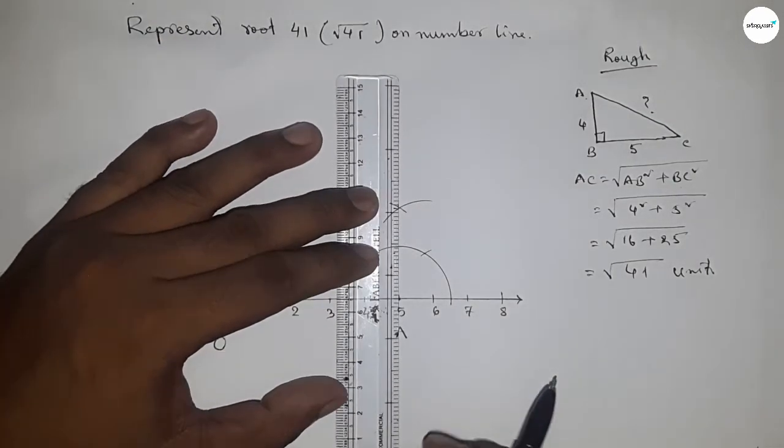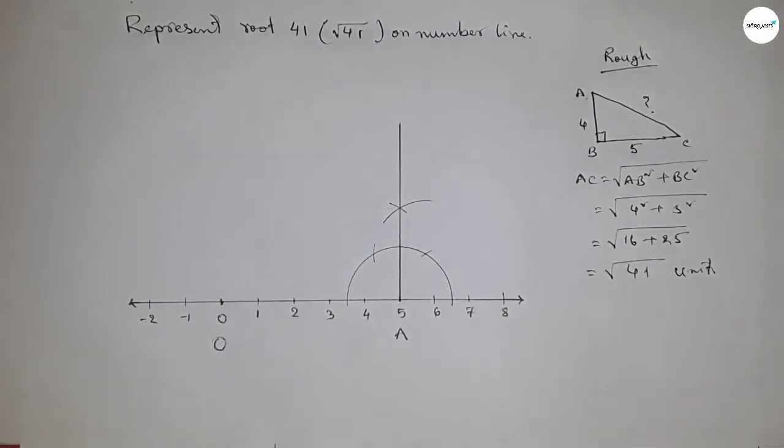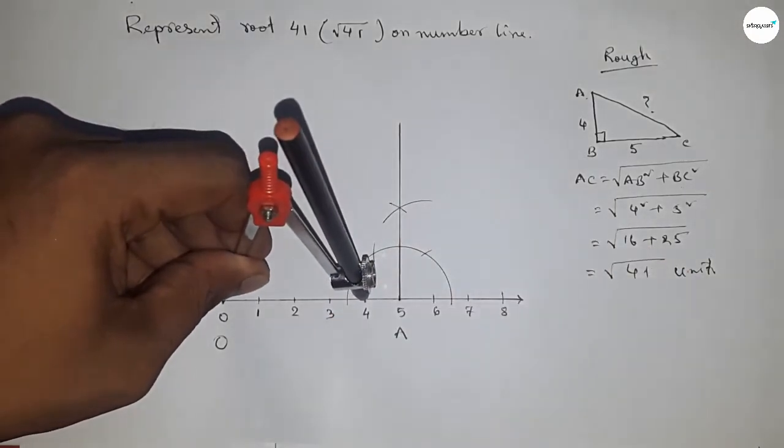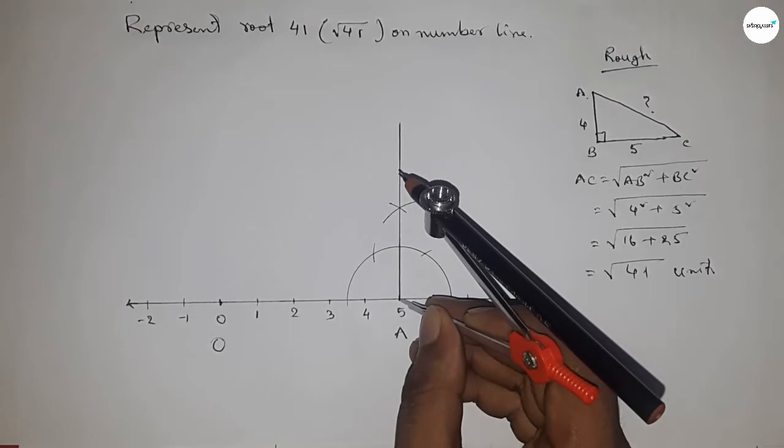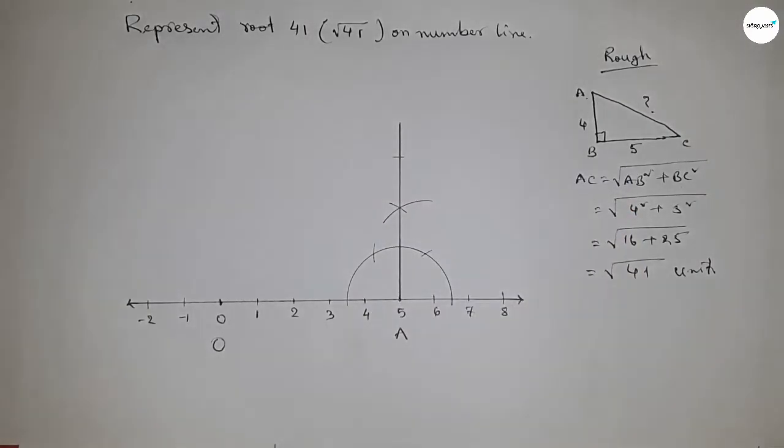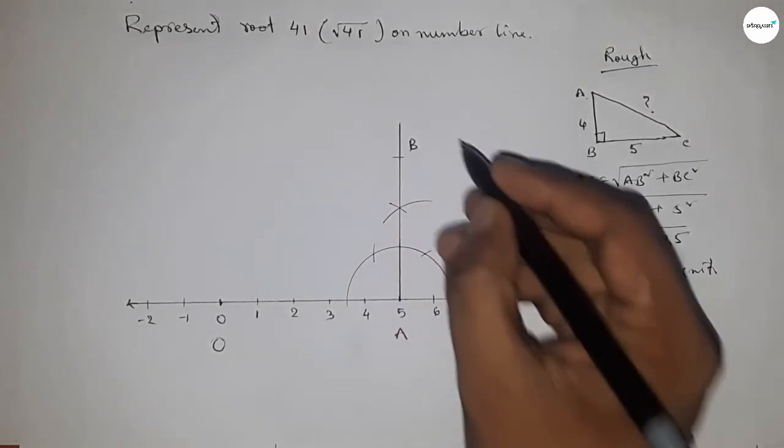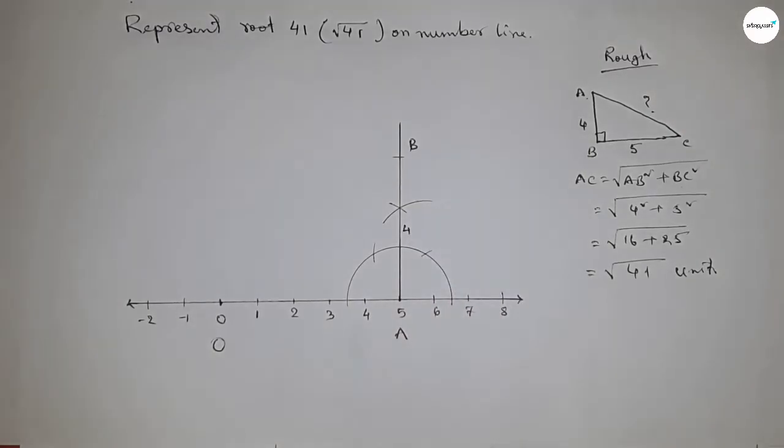Now take 4 unit length by compass and put the compass here and cut here. So this is point B and this is 4 unit length. Now join this.